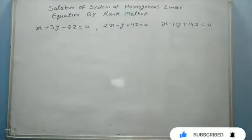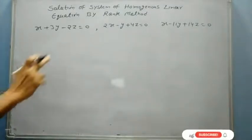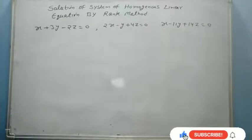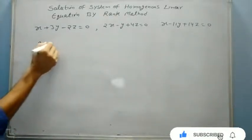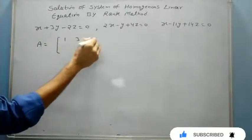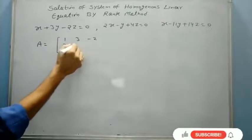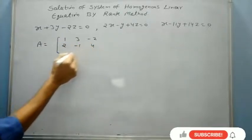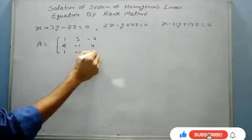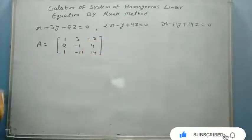We have to solve this. As we see here, we have a constant value 0, all zeros on the right side. It means it is a homogeneous equation. To solve it, I have matrix A that is 1, 3, minus 2, 2, minus 1, 4, 1, minus 11, and 14.